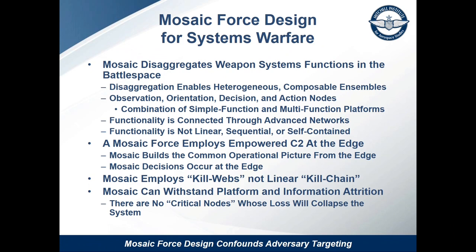We need quantity of nodes to complicate the adversary's problem set — every node in our operational system has to provide value to our combat operations. This creates a confounding problem for China because no matter what node or network they target, that information continues to be shared through other nodes and replicated through other networks. We can therefore survive platform, information, and network attrition and still close those kill chains — because they become kill webs. That functionality is connected through those networks; it's not linear, not sequential, and not self-contained. We also need command and control at the forward tactical edge, including processing at the very edge.